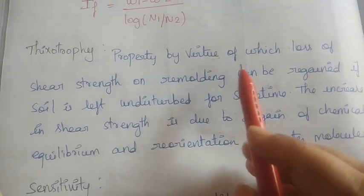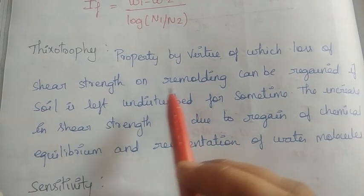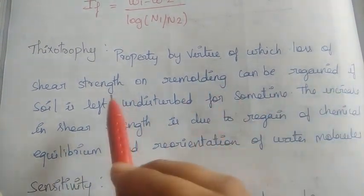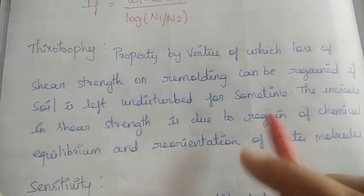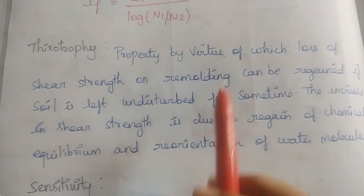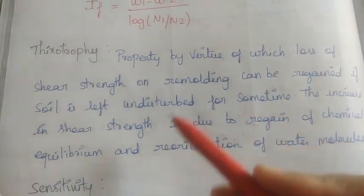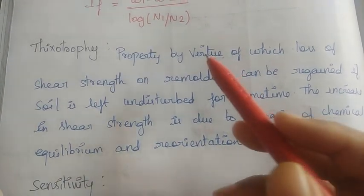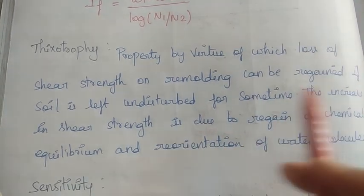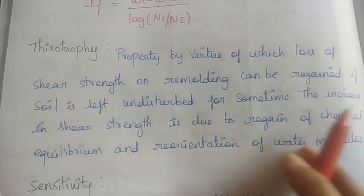This is the property of thixotropy — the loss of shear strength on remolding can be regained by the soil over time. It is like a memory. If the soil loses its structure, it will regain its original properties. The regain is due to chemical equilibrium and the reorientation of water molecules.